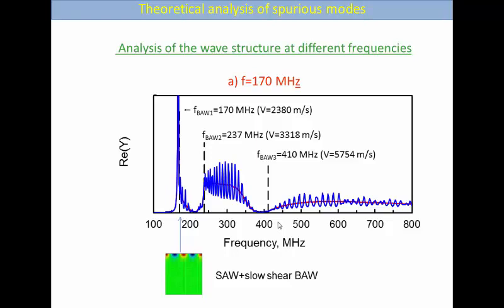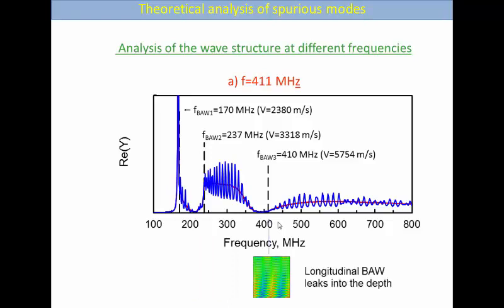If finite thickness of the substrate is added, we can see in addition ripples. To understand the nature of different modes propagating in our substrate, the structure of these modes was visualized. Here you can see the structure calculated at the frequency 170 megahertz. Though there is contribution of slow shear bulk wave, in general it looks like a perfect SAW. For the fast shear bulk wave we have different structure, and we will discuss it later. For the longitudinal bulk wave we can see that this mode leaks into the depths.